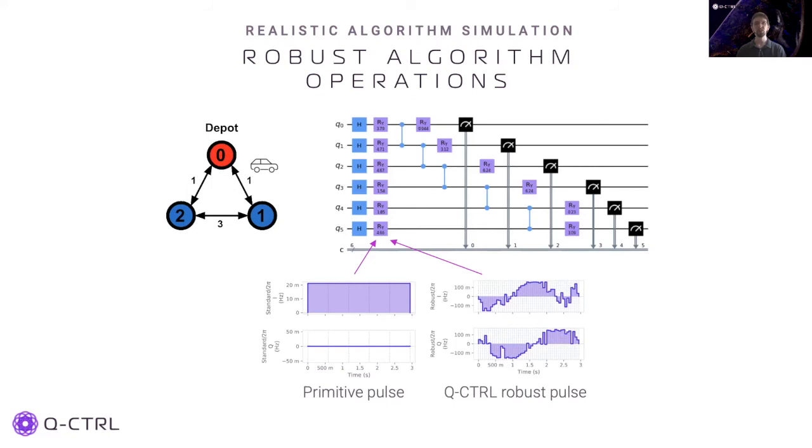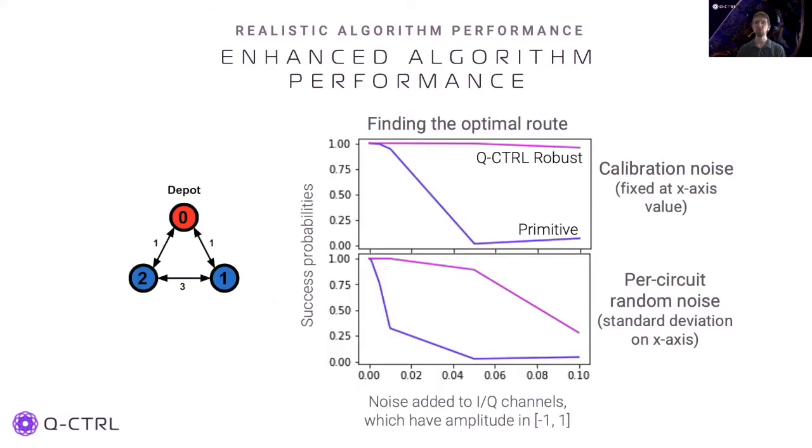Next, we applied our realistic algorithm simulator to model the optimization of a smaller scale, three-node network, including coherent over-rotation errors. The VQA algorithm circuit is shown where the purple boxes are single qubit rotations. The parameters for these single qubit rotations are optimized by the algorithm, and the noise impacts their implementation. We will look at replacing standard square pulses with operations that have been optimized to be robust to the given noise channel.